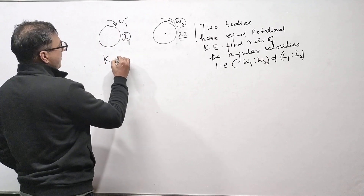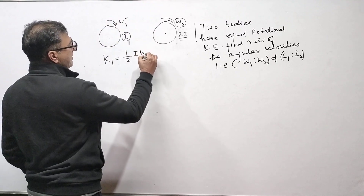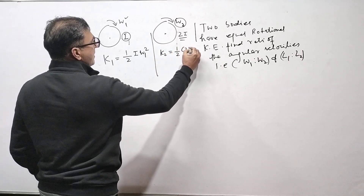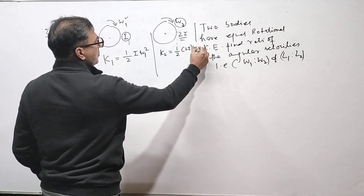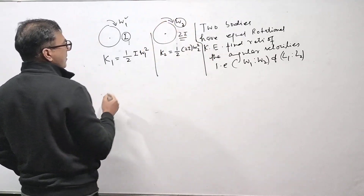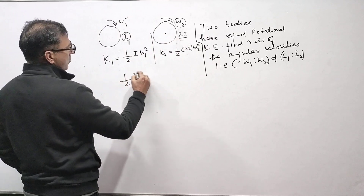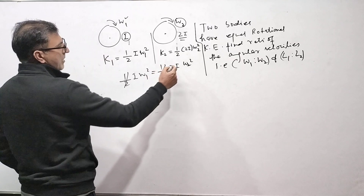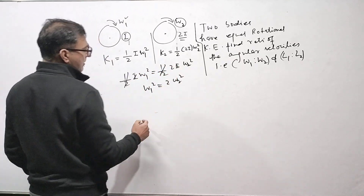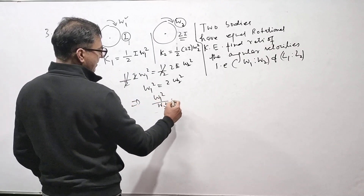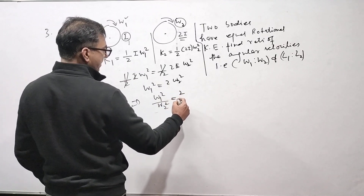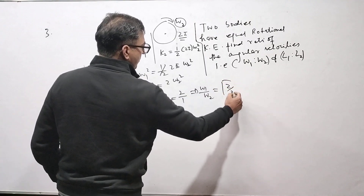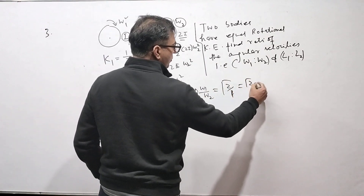Since the rotational kinetic energies are equal: K₁ = (1/2)Iω₁² and K₂ = (1/2)(2I)ω₂². Setting them equal: (1/2)Iω₁² = (1/2)(2I)ω₂². The I cancels, giving ω₁² = 2ω₂², so ω₁²/ω₂² = 2/1. Therefore ω₁/ω₂ = √2/1, meaning ω₁ : ω₂ = √2 : 1.